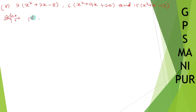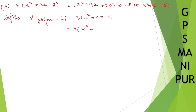So the first polynomial is equal to 3x² + 2x - 8. We need to split the middle term. Using the identity a² + 2ab + b², let me write it down as x² + 2x - 8.